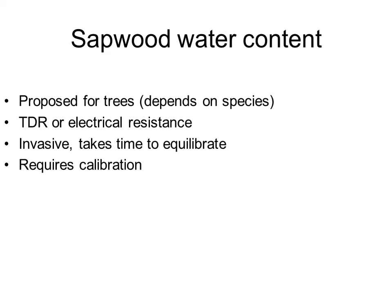Finally, among plant-based methods, I would like to mention sapwood water content as a possible variable to detect plant water stress, basically in the case of trees. It will depend on the species — in some species the variation in sapwood water content might be important, in others not. To measure sapwood water content we can use TDR (time domain reflectometry) or electrical resistance sensors, which are much cheaper but invasive. If we use electrical resistance, it takes quite a long time to equilibrate after insertion — possibly more than one month.